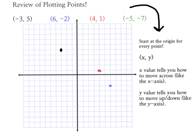Our last ordered pair is (-5, -7). I'm going to go back to the origin for my starting point. I'm going to move to the left 5 because negative numbers move left, and then down 7, and I'll put my point. And there's our point.